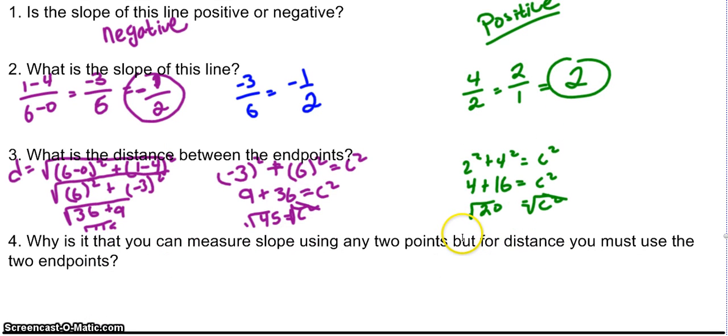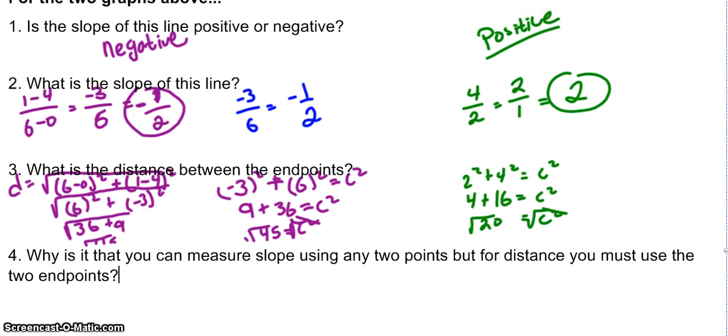Now that we're a little more comfortable with slope and distance, let's answer number 4, a more conceptual question. Why is it that you can measure slope using 2 points but for distance you must use the 2 endpoints?